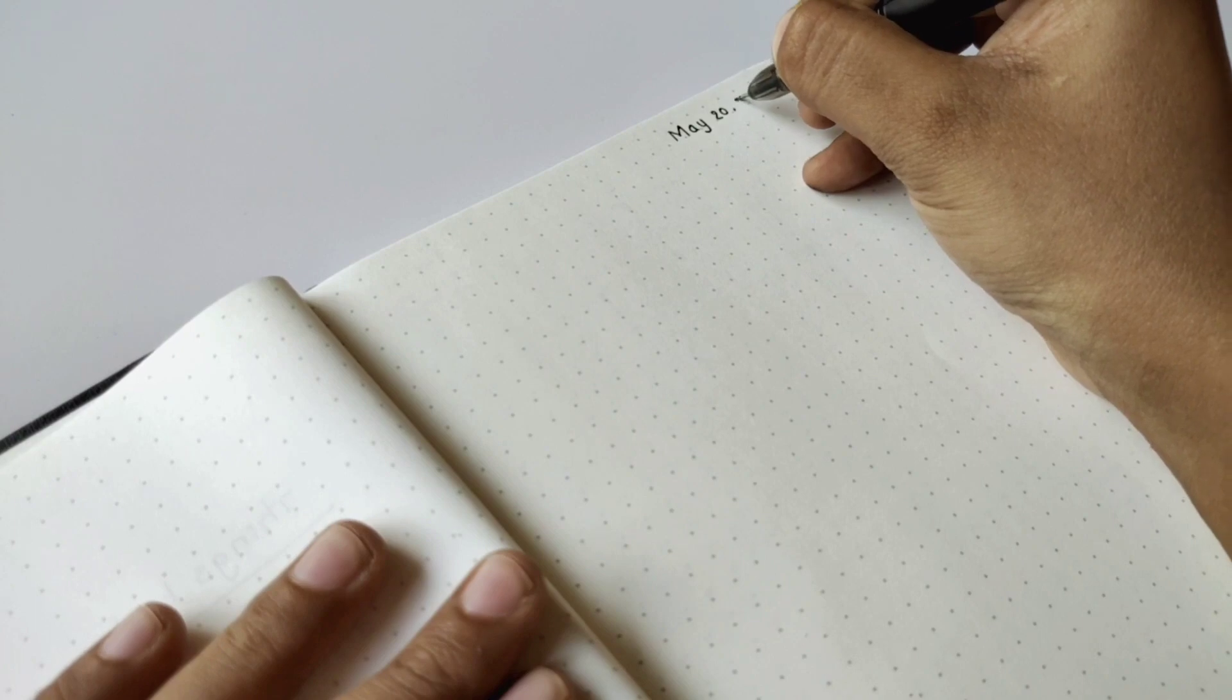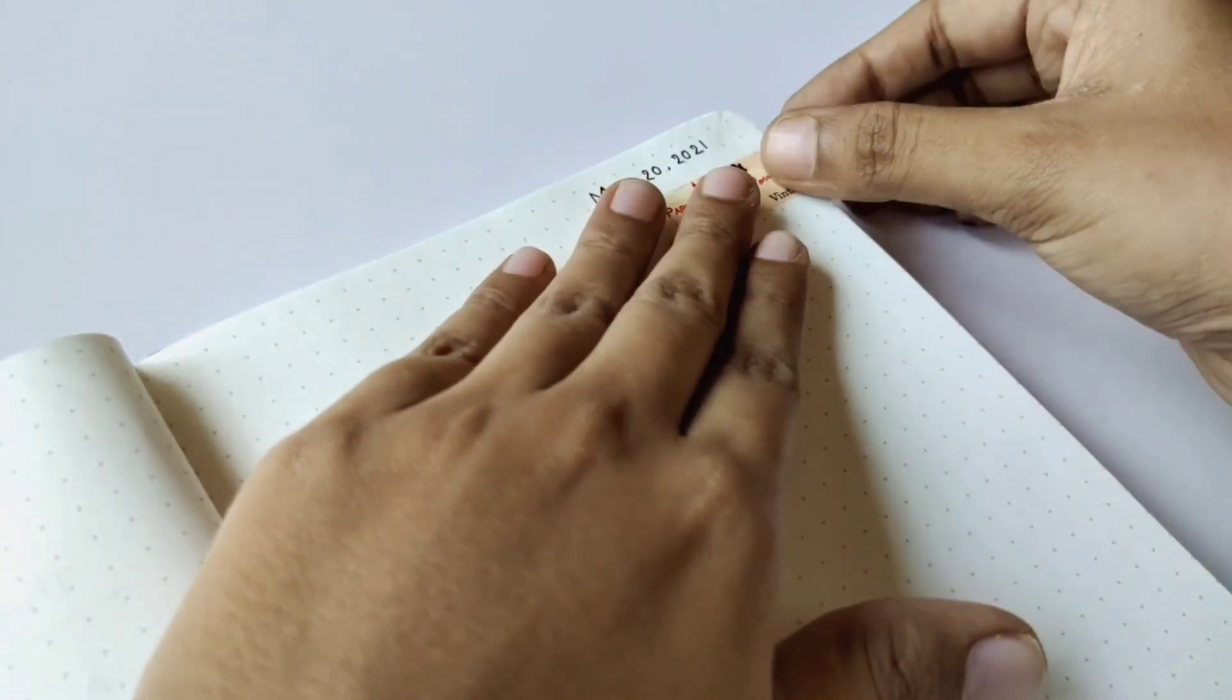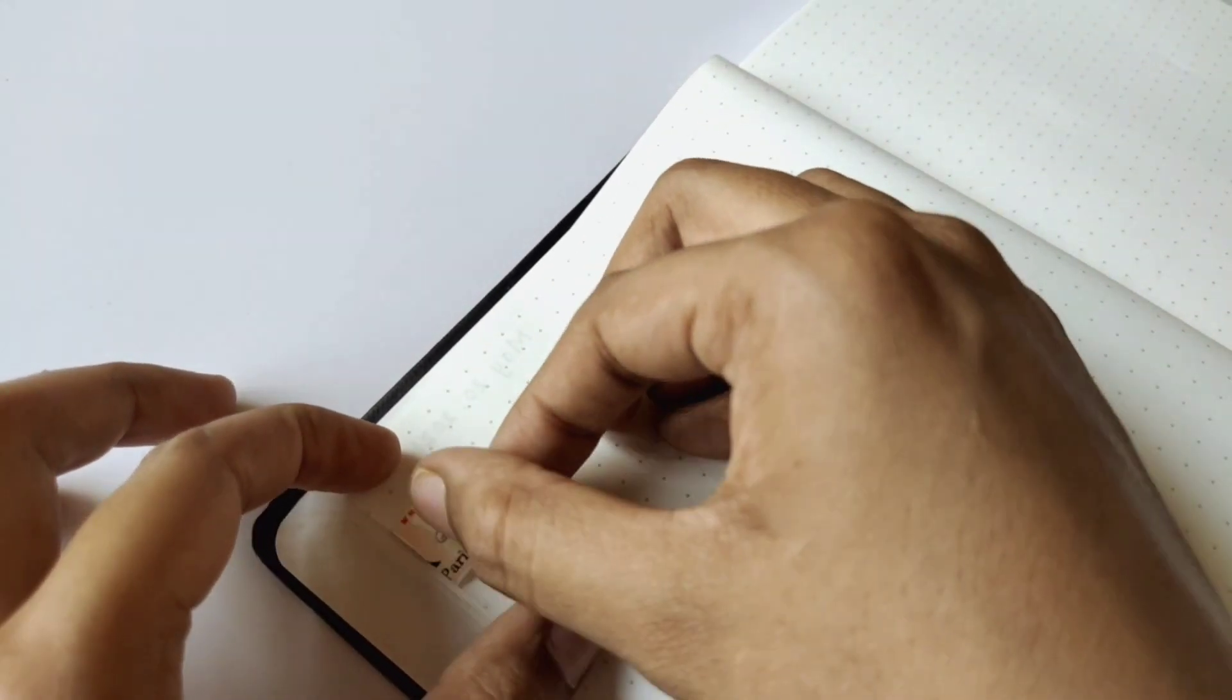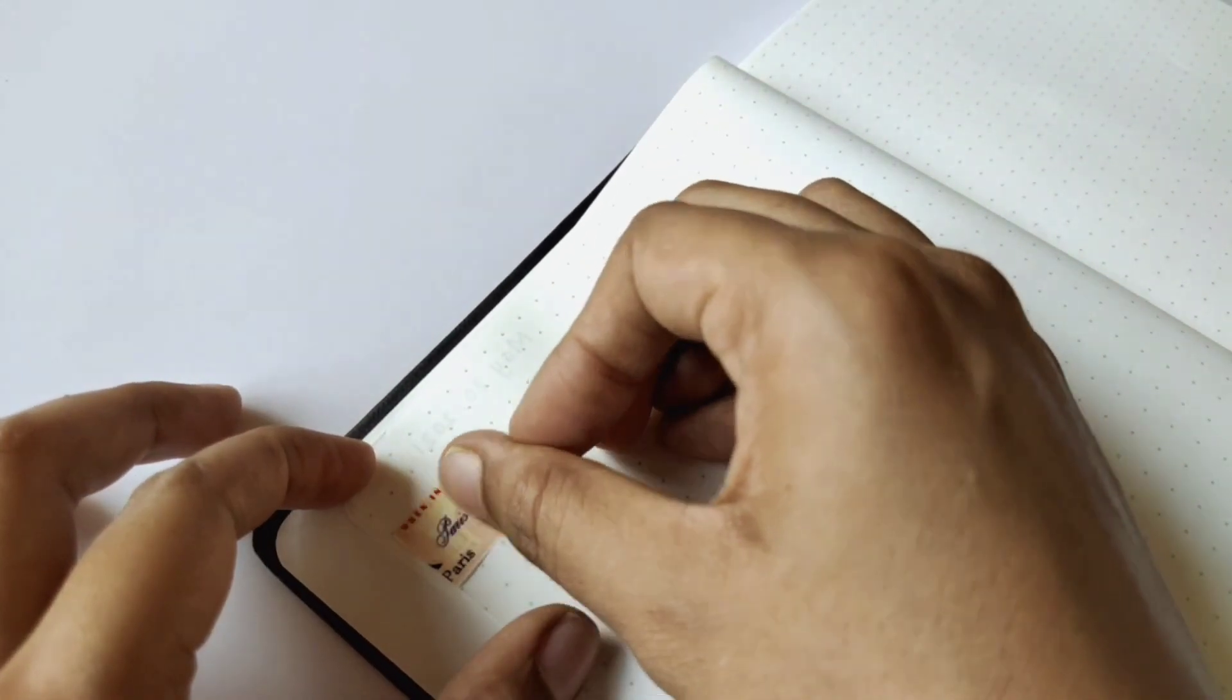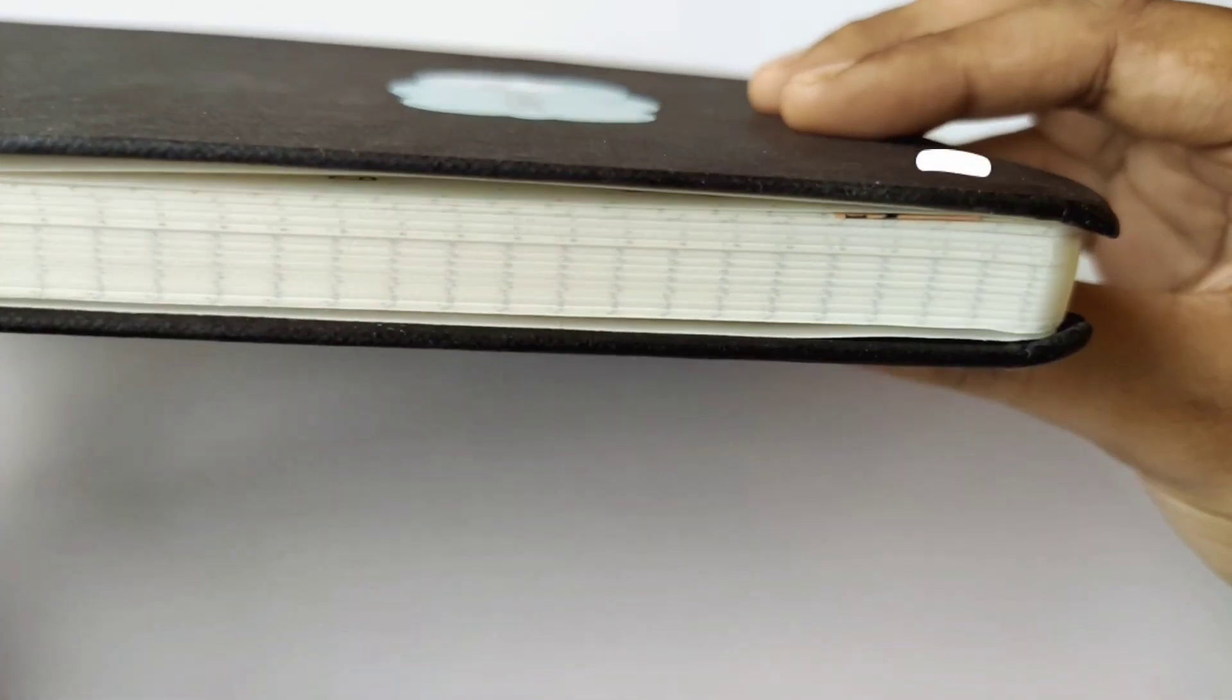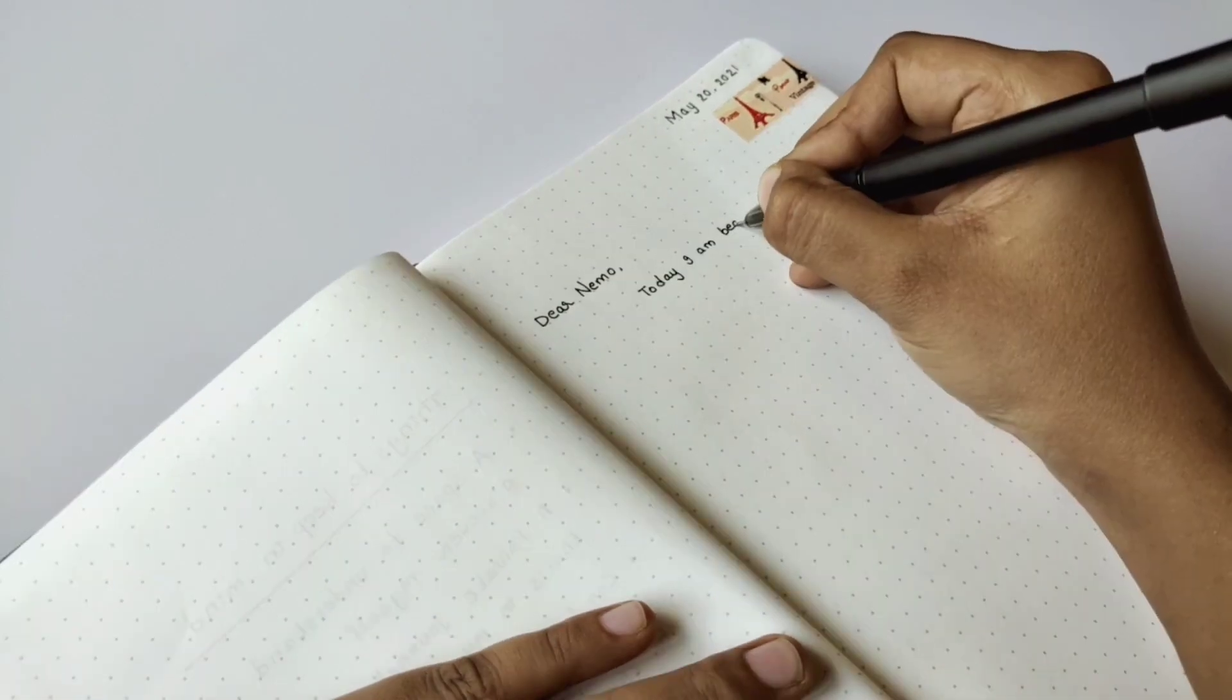Today I want to write my first entry. Also bookmarking this page with the washi tape to color code the months so that I can always get back to it easily. I don't have anything particularly on my mind except how excited I am to start this journal and how I could use this.